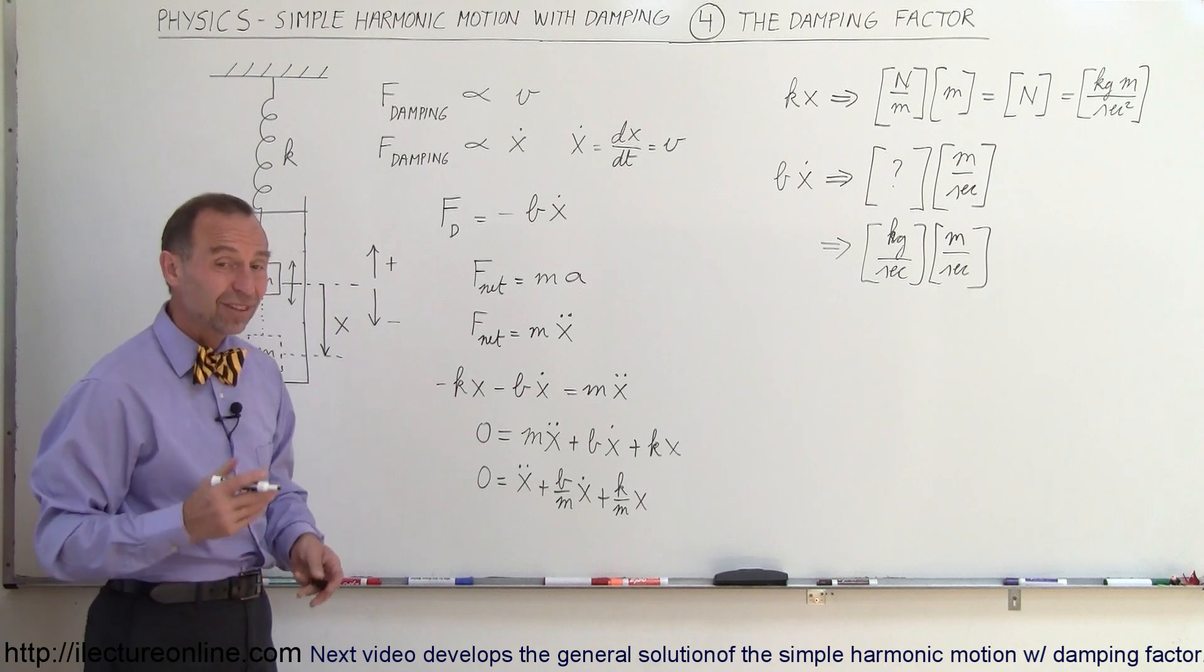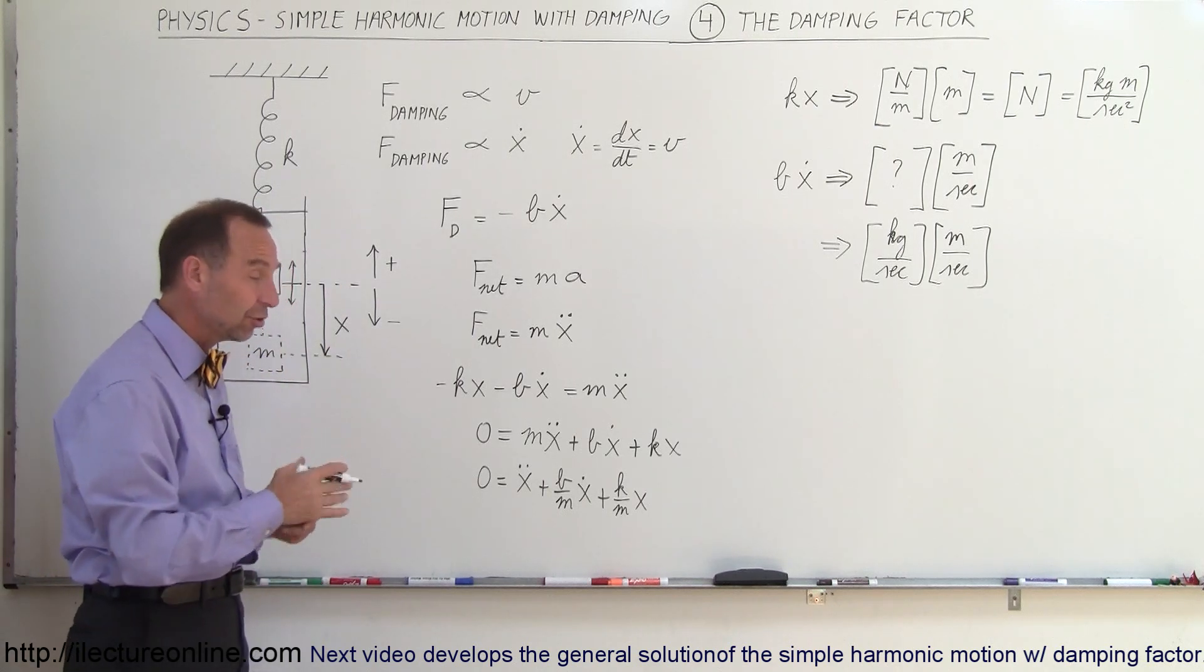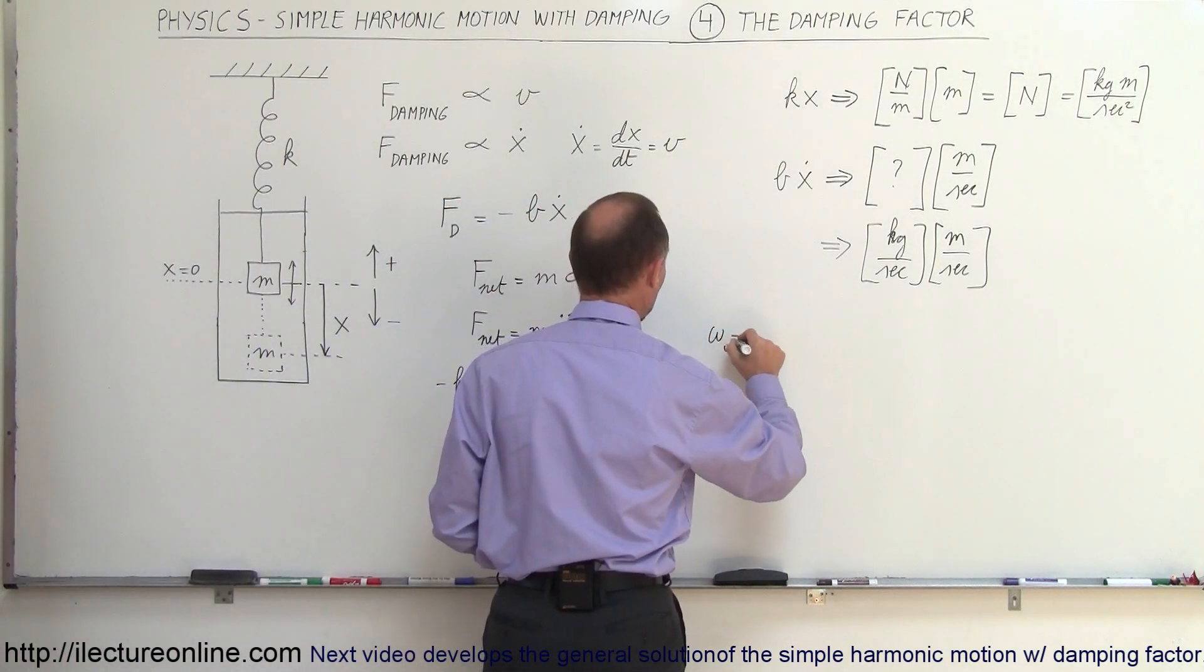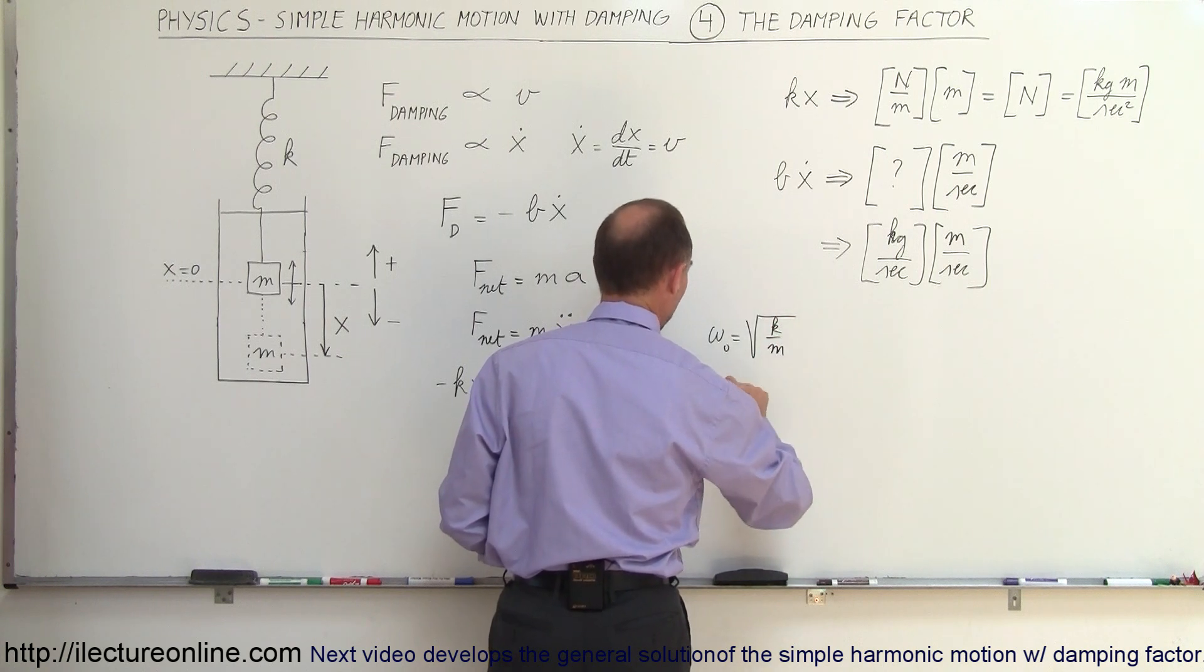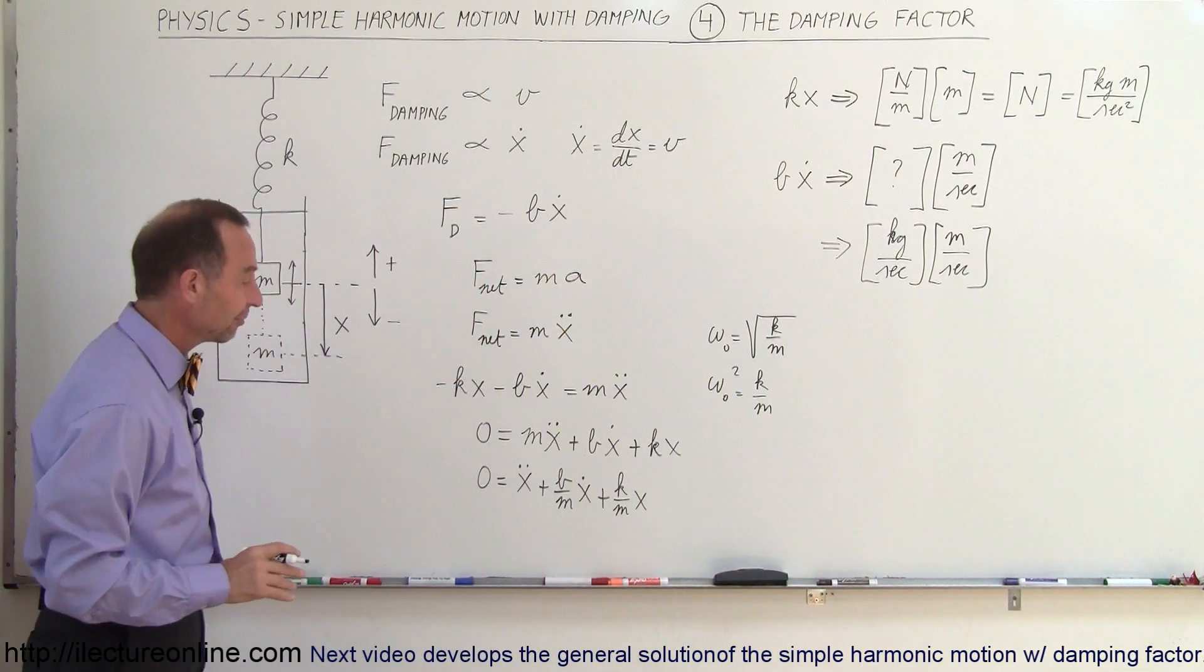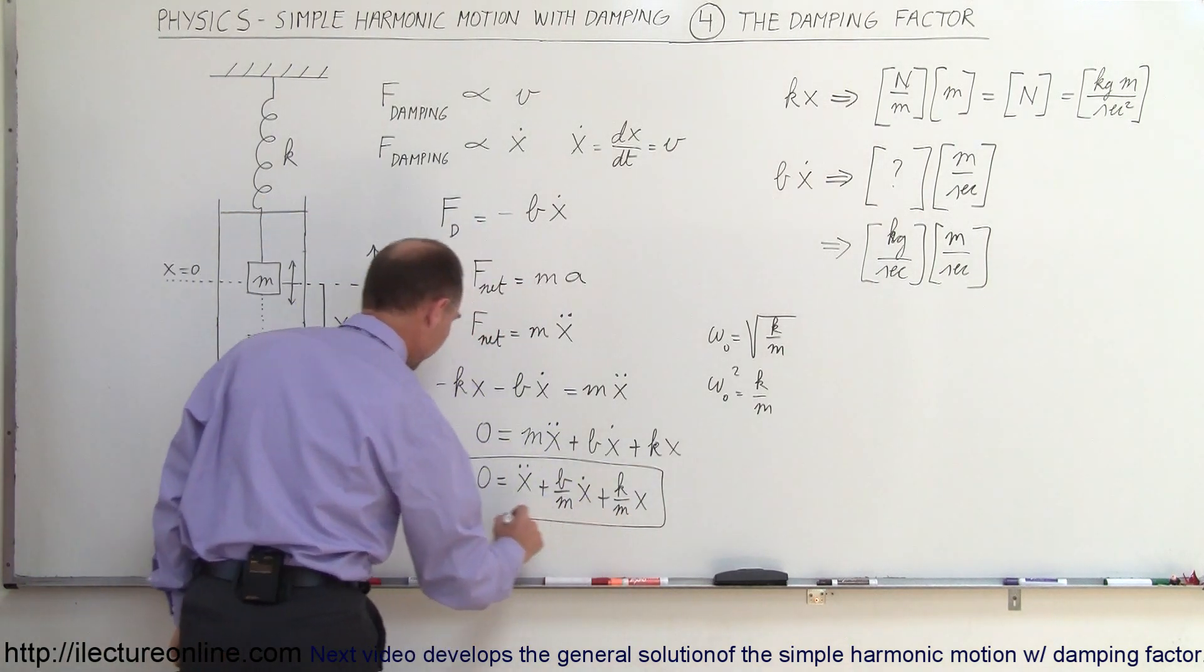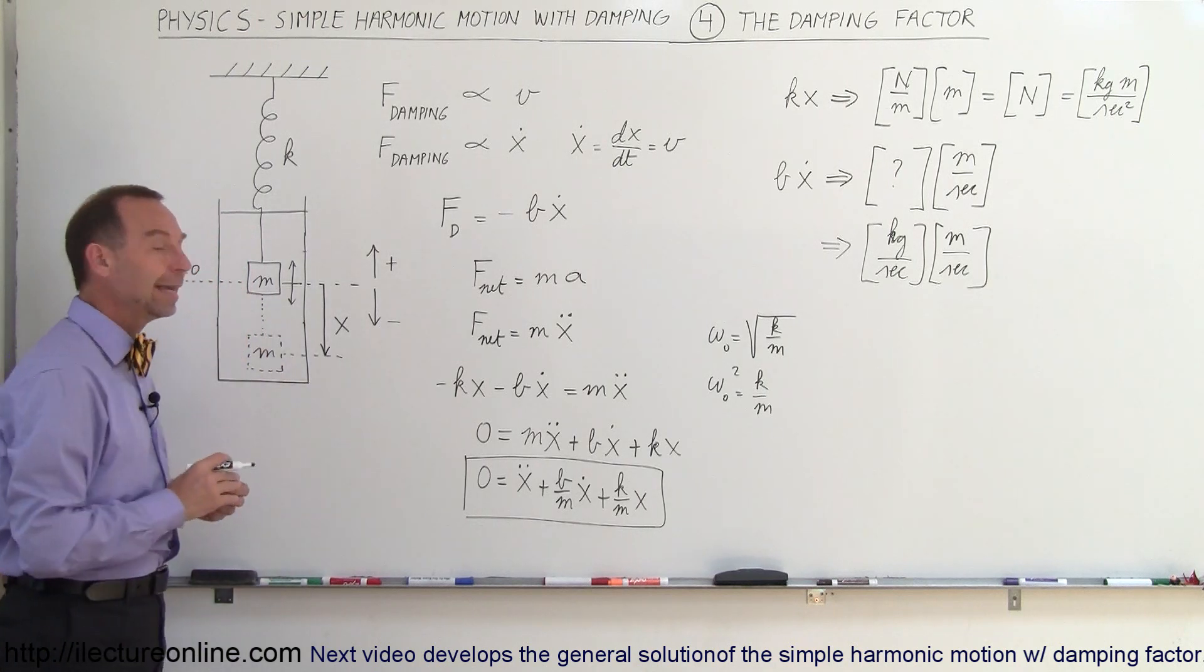Now we probably want to divide both sides of the equation by m. So we end up with 0 equals x double dot plus b over m times x dot plus k over m times x. Notice that k over m still represents the angular frequency of the oscillation without damping. In other words, omega sub naught can be written as the square root of k over m, or omega sub naught squared equals k over m.